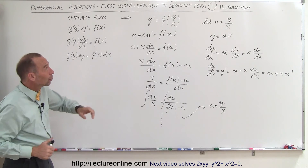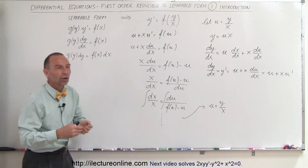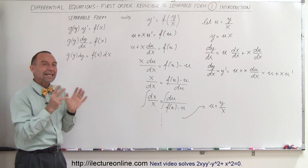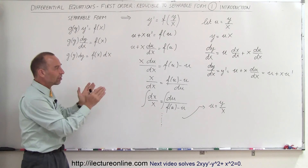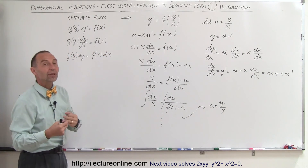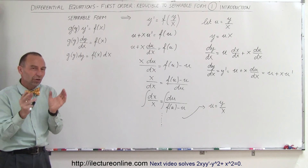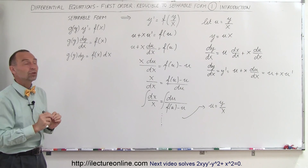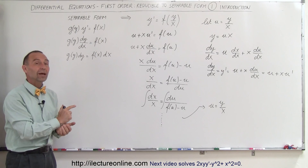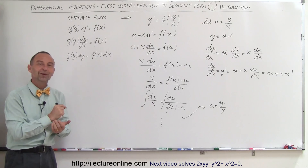It turns out we don't always use the substitution u = y/x. There may be other situations — for example, if we see 2x minus y, we can let u = 2x - y to make it easier to separate the variables. We'll start with the standard type of equations requiring u = y/x, show some examples, and then show how this technique applies to other cases where we have some other function of x and y that we can substitute to enable separation of variables. Stay tuned for some really good examples of how to use this technique to solve first-order differential equations.